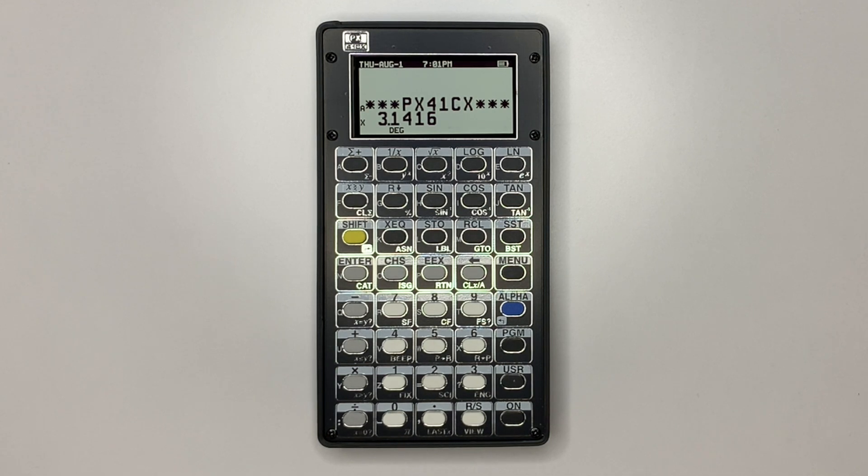N-Queens, for example, runs in 1 minute 56 seconds compared to 1 minute 54 seconds on the DM41X running on battery. Very comparable for an 8-bit processor versus a 32-bit processor.